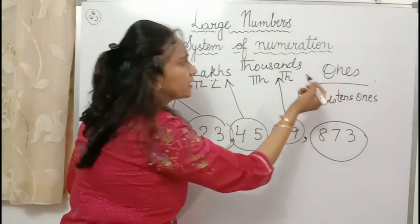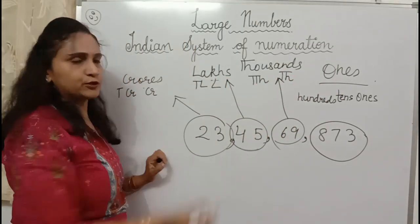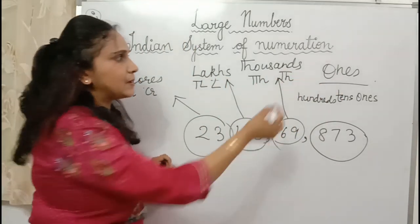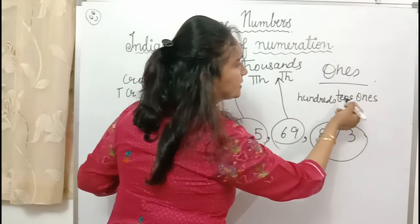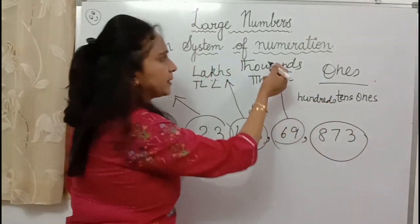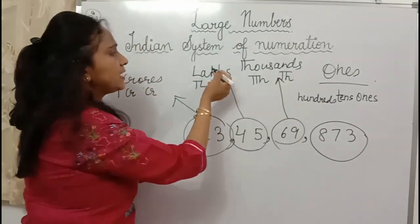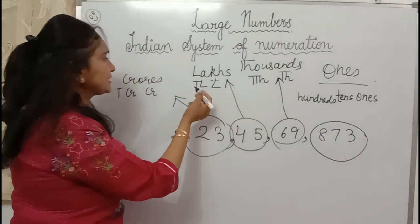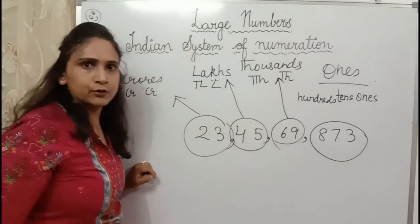One's period, thousand's period, lakhs period, and crore's period. Members of one's period: ones, tens, hundreds. Members of thousand's period: thousand, ten thousand. Lakhs period: lakhs, ten lakhs. Crore's period: crore and ten crore.